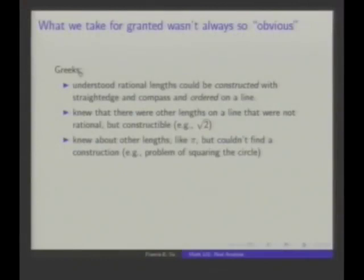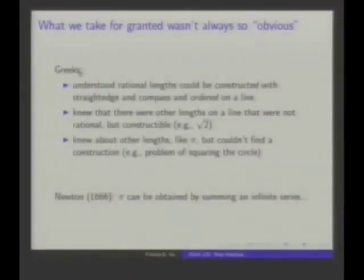The Greeks knew about other lengths, like pi, but couldn't find a construction giving a line of length pi. It turns out you can't construct pi because it's transcendental, and constructible numbers are always algebraic and therefore not transcendental. Pi can be obtained through an infinite process — Newton came up with an infinite series that sums to pi.